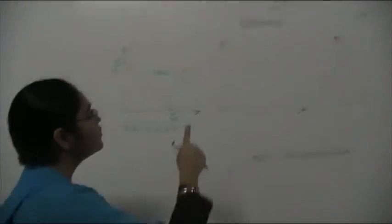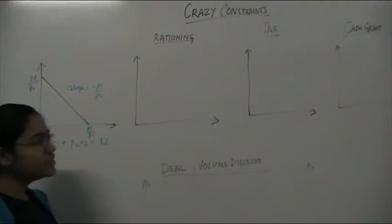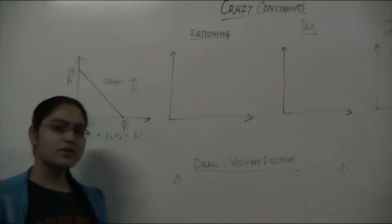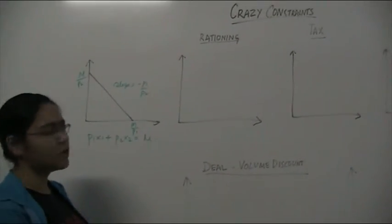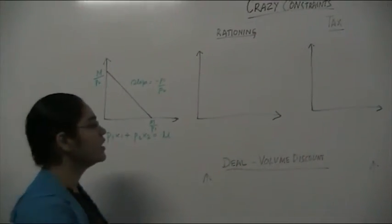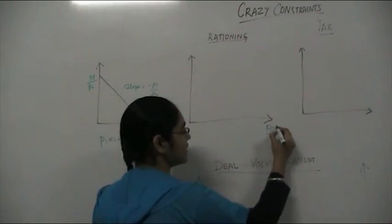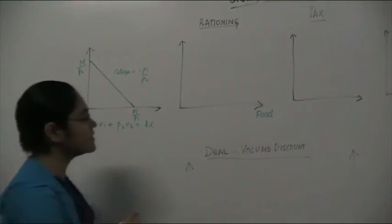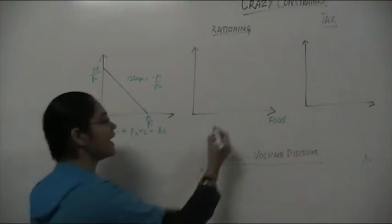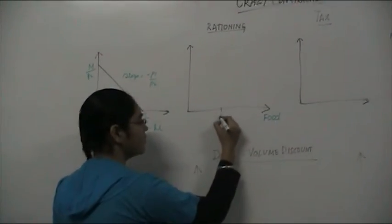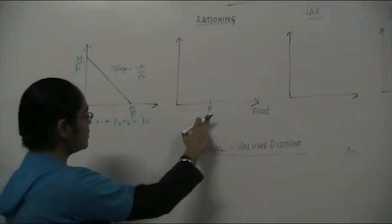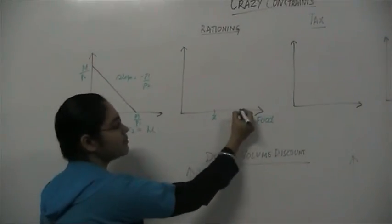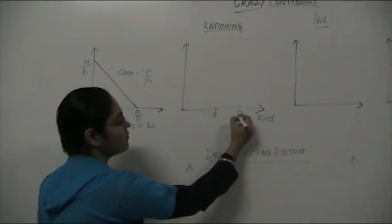Let's move to rationing. Now what is rationing? Rationing is when the government fixes your quota of a good. Let's say we have food on the x-axis, and the government fixes the amount of food that you can have — say x-bar — and let's say this x-bar is less than m/p1, what you would normally have.